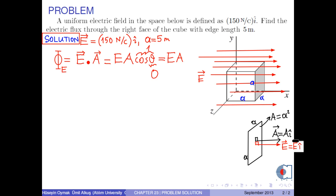The area of the right face of the cube is A squared. Now, we substitute the numerical values into this formula: 150 N per C times 5 meters squared.